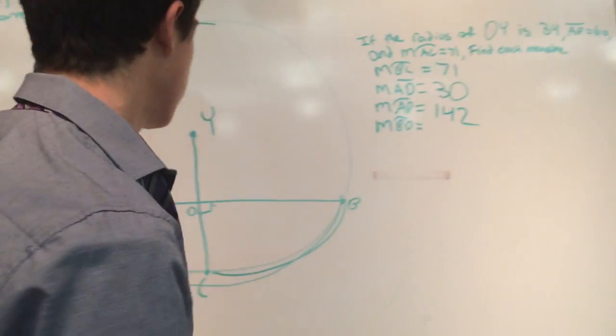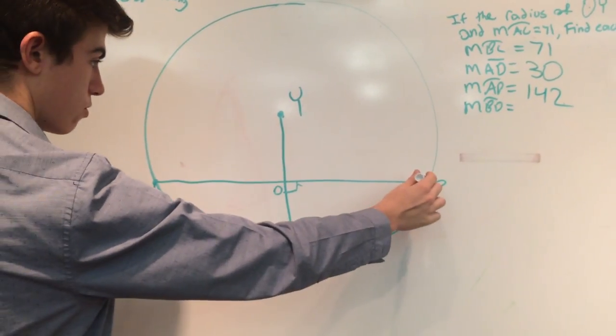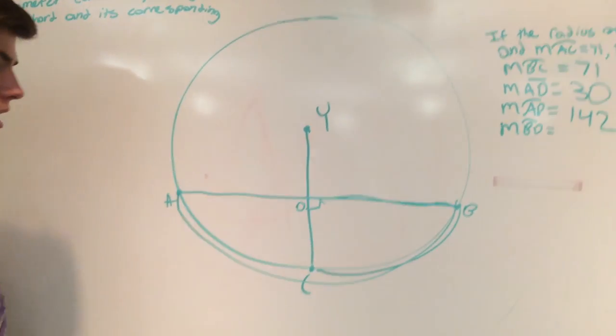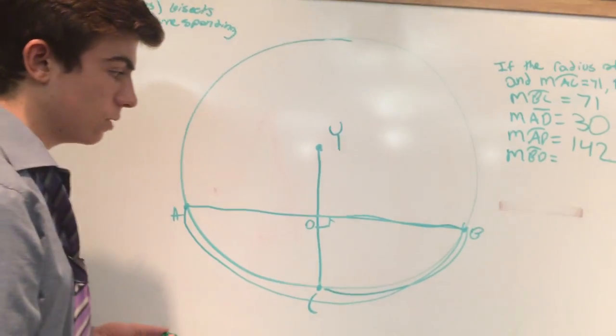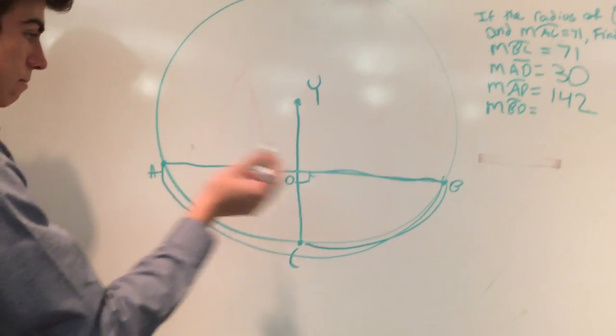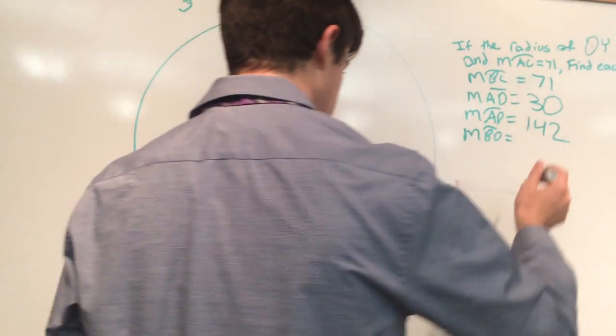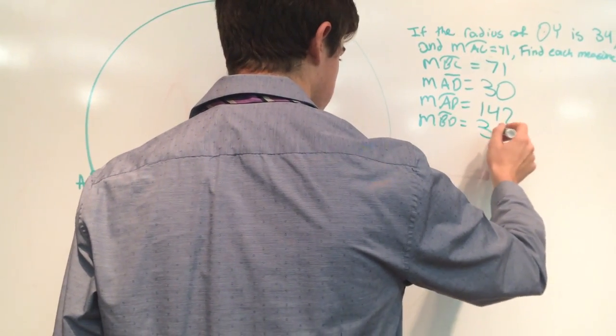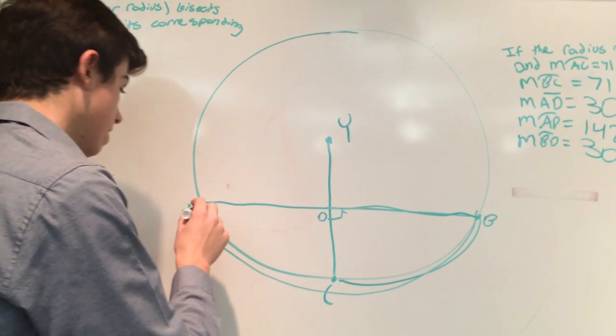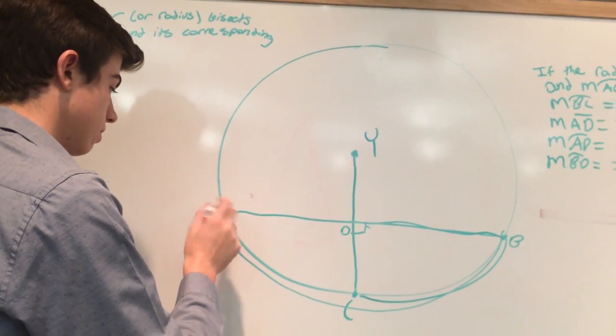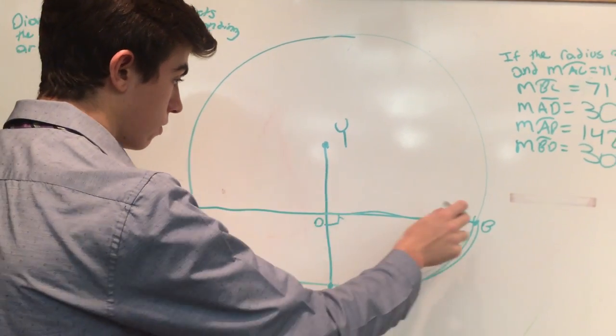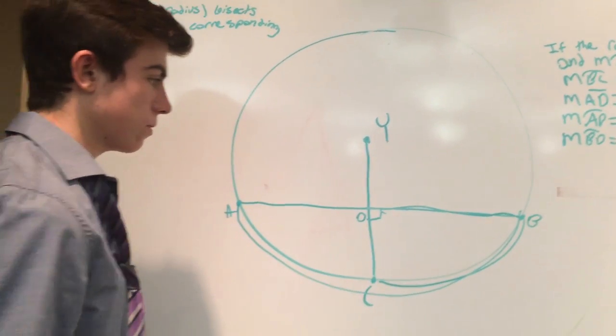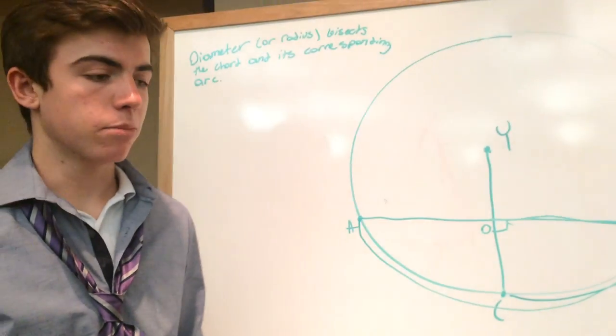For the last one, find the measure of BD. Like we said, this bisects the chord equally in two, and AB is 60, so this would be 30 as well. The measure of line segment AD is the same as line segment BD, which means they're congruent. That's the example.